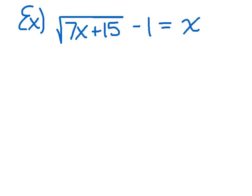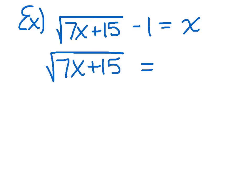Let's try another example: the square root of 7x plus 15 minus 1 equals x. Recall those three steps. Step 1 is to isolate the radical by itself, so I simply need to move over the negative 1 by adding 1 to both sides. Now x and 1 are not going to be like terms, so all I can do is put x plus 1 on that side. Step 2 is to eliminate that radical by raising both sides to a power — whatever we do to one side, we want to do to the other.